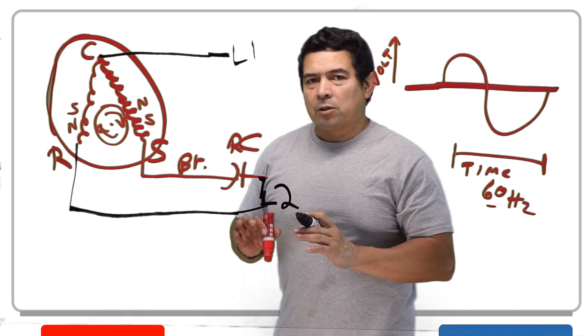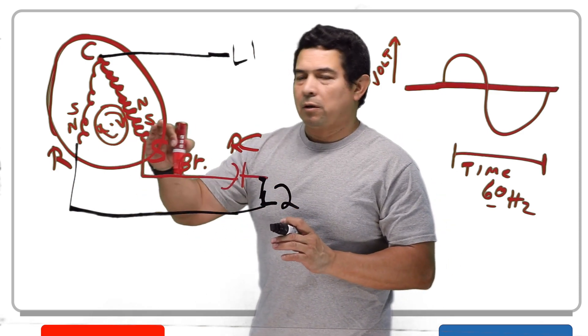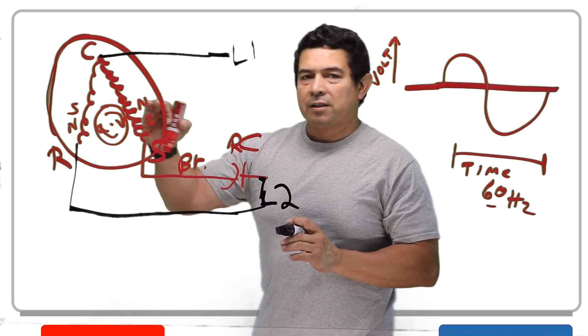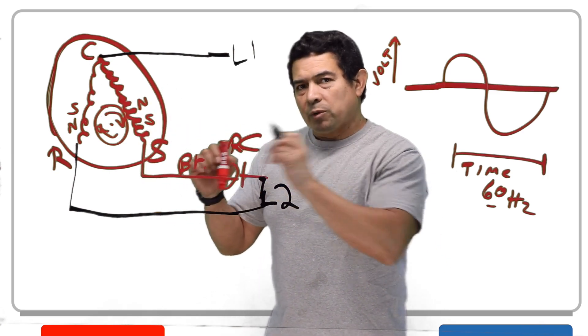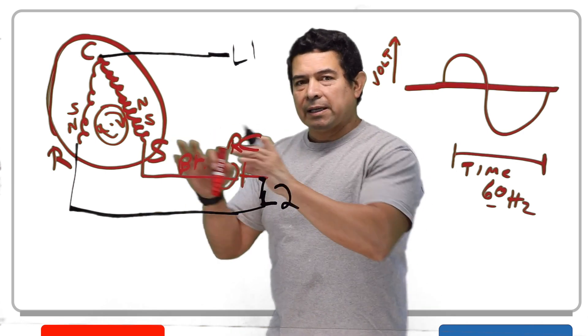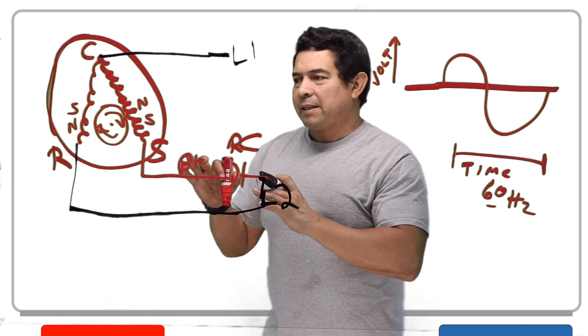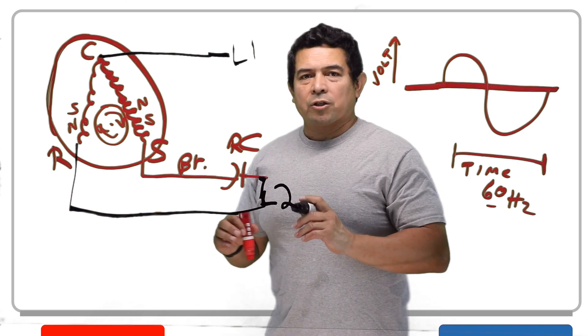If we didn't have a capacitor, what would happen is we would have a north and a north here and then a south and a south, then a north and a north, then a south and a south. So the pulse would be the same. Now there's that time delay. Because there's that time delay, this rotor actually rotates.